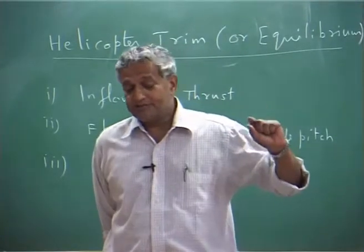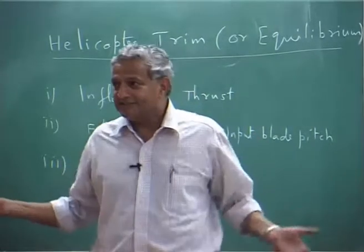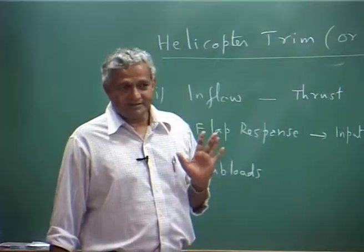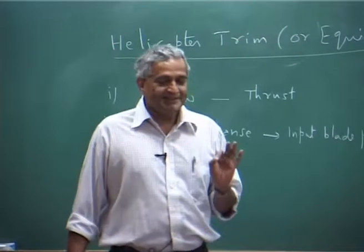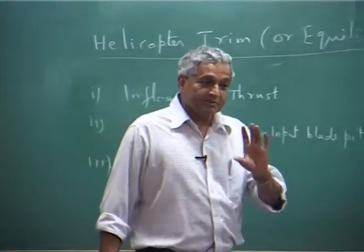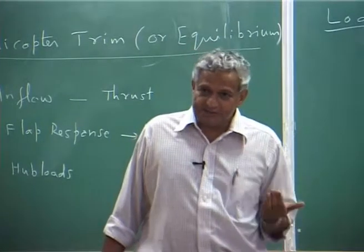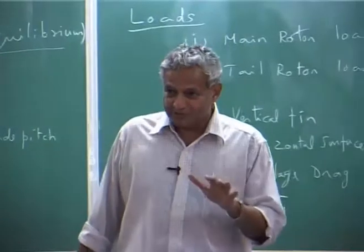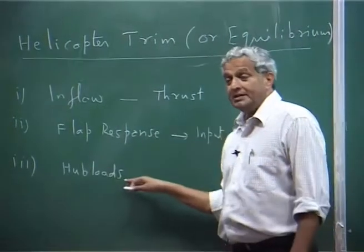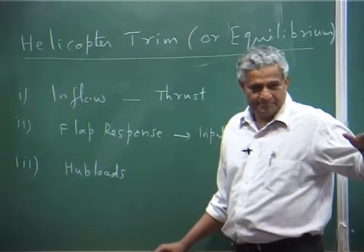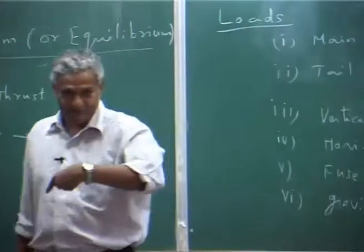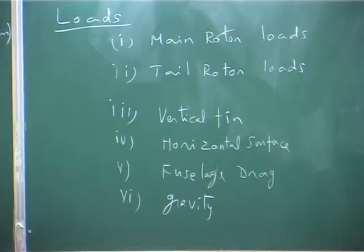For a particular configuration, you must know the weight — how much fuel and everything. Then write the six equations of equilibrium: three force equations and three moment equations. They will be in a particular coordinate system — whether you want to write in earth-fixed or body-fixed coordinates. All these loads are obtained in the body-fixed coordinate system, so it is always preferable to use the body-fixed coordinate system. Transfer all these loads to that and then write the equations.